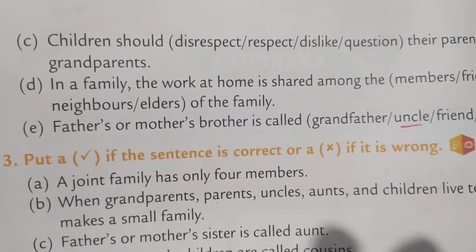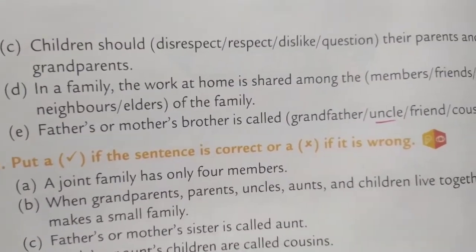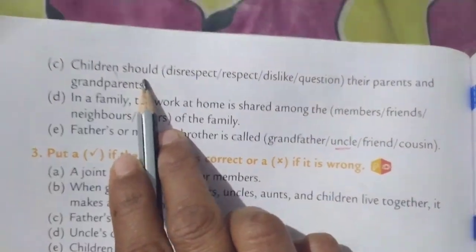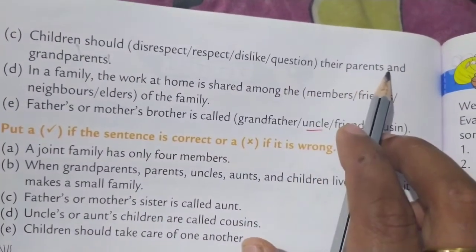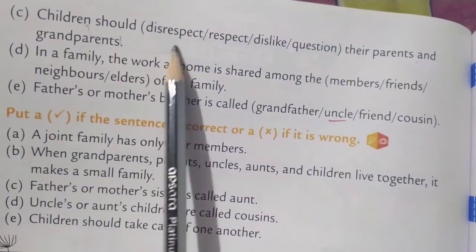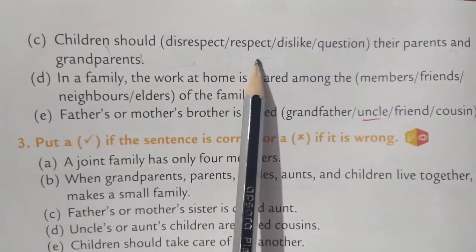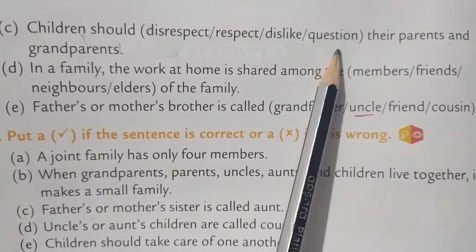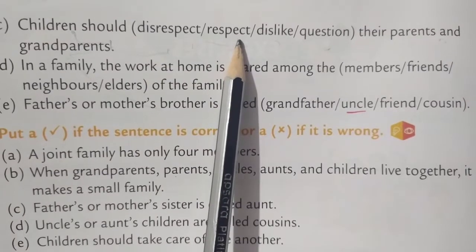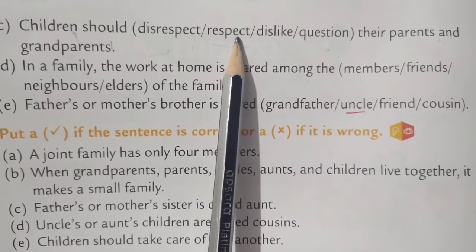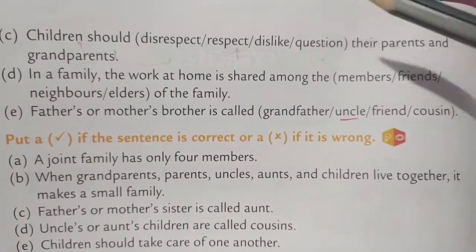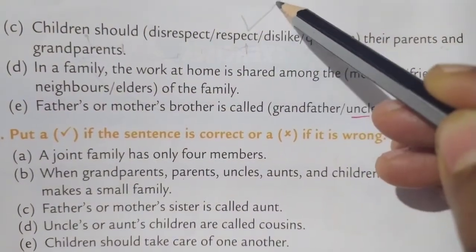Turn the page and read question C: 'Children should dash their parents and grandparents.' Options: disrespect, respect, dislike, Christian. Children should respect their parents and grandparents. Spelling: R-E-S-P-E-C-T. Put tick on respect.